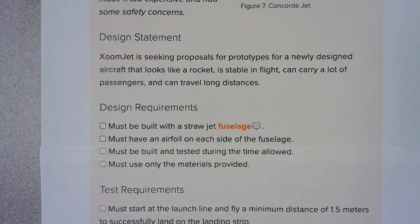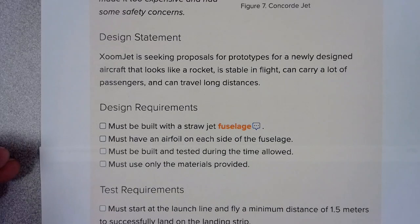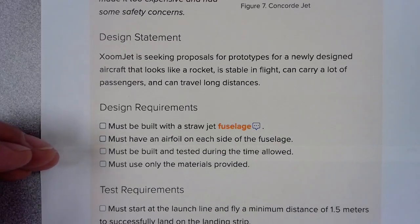If we review the design statement, we're going to have to build a straw jet. So we're going to have to make a fuselage made out of paper, and then eventually we're going to add airfoils to each side of the fuselage.